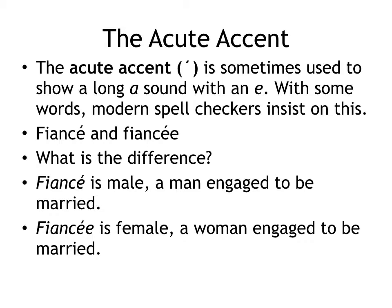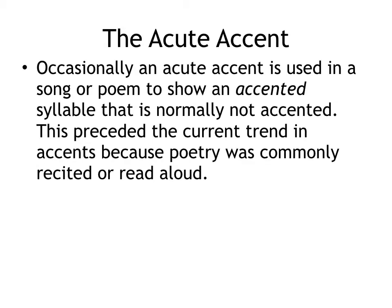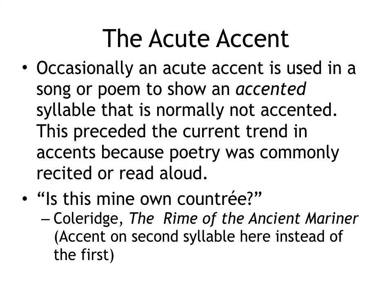In English, occasionally an acute accent is used in a song or poem to show an accented syllable that is not normally accented — kind of like the grave accent to show a syllable that's usually not pronounced separately. This preceded the current trend in accents because poetry was commonly recited or read out loud. Here is an example from Coleridge's The Rime of the Ancient Mariner, where the character says 'Is this my own country?' The author spelled country differently and added the accent mark to emphasize that the accent was on the second syllable, where normally we put the accent on the first syllable.